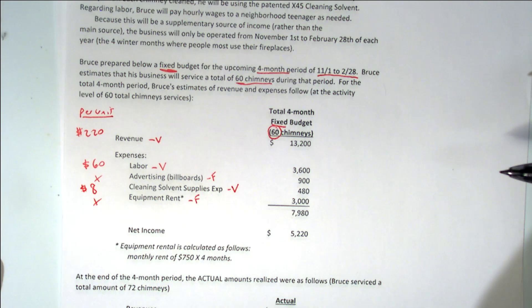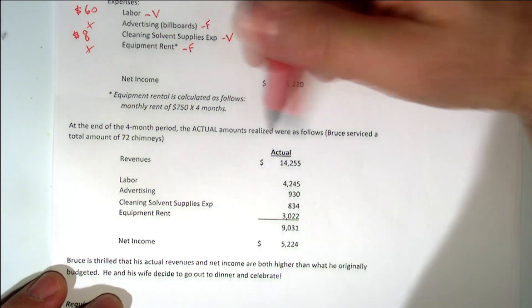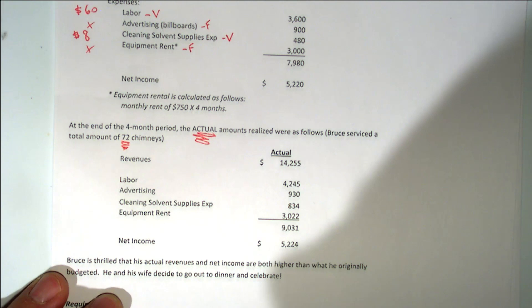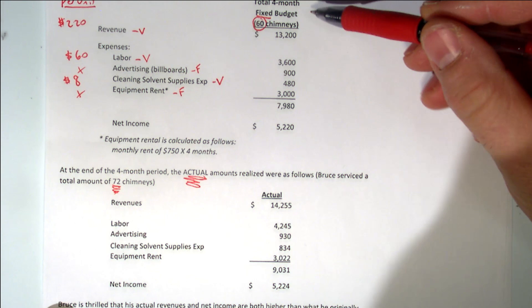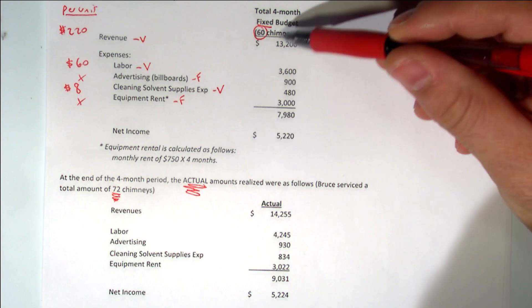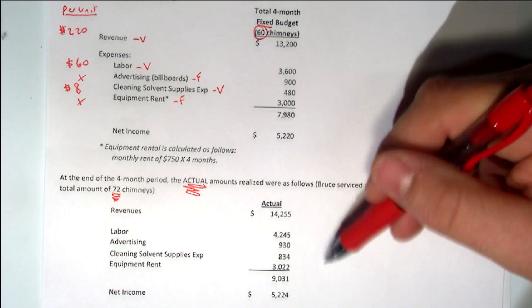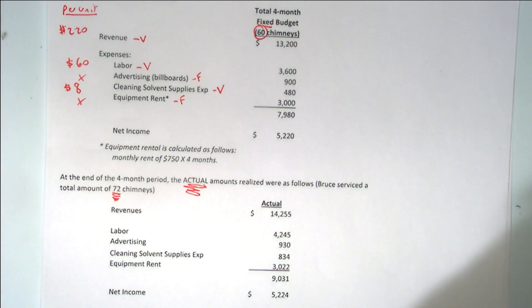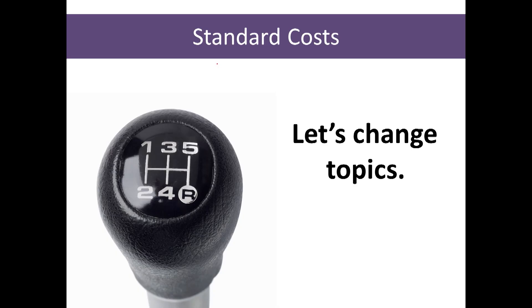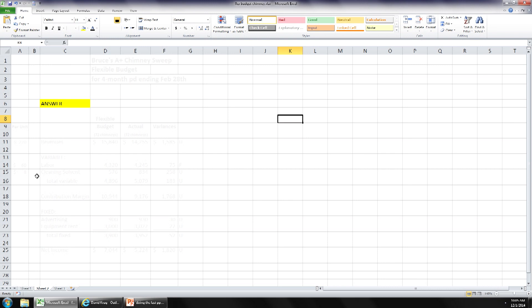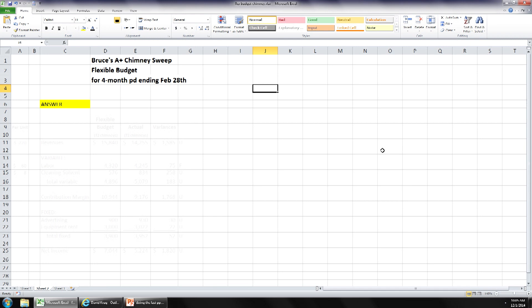We're going to use this information to prepare our flexible budget. At the end of the four-month period, the actual amounts he realized were as follows: he serviced a total of 72 chimneys. We cannot meaningfully compare the actual to this fixed budget because the activity levels are different — the fixed budget is at 60 chimneys, the actual is at 72. So we have to prepare a flexible budget.